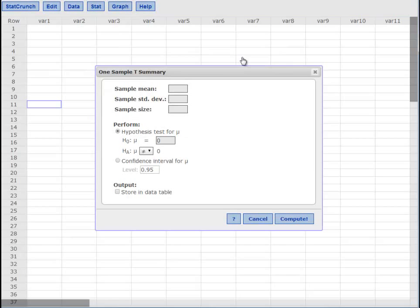The average of the sample mean was 98.2. The sample standard deviation was 0.62 and our sample size 106. We are hypothesizing that the mean is 98.6 and we are just looking for a not equals, a two-tailed test. We are going to compute.